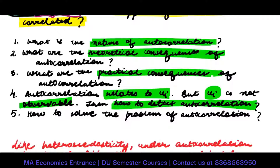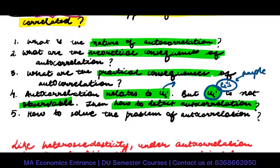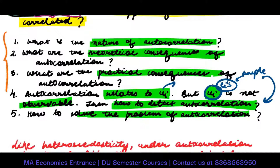The error of the population is not known to us. All we can see is EIs, which are related to a particular sample. Then how do we detect autocorrelation? And finally, how do we resolve the problem of autocorrelation? These are the issues we will be addressing as part of this chapter.